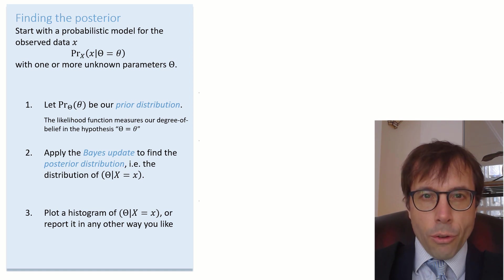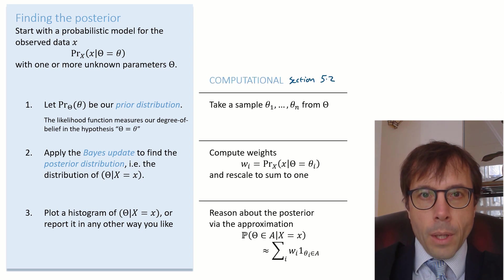Let's flesh out these three steps. Here's the computational approach first. This is a recap of what we learned in section 5.2. For step one, we'll take a sample of values from the theta random variable. For step two, we compute weights, one for each sampled theta value. We let weight Wi be the likelihood of the data set, conditional on the parameter taking value theta subscript i. And then we rescale all the weights to sum to one.